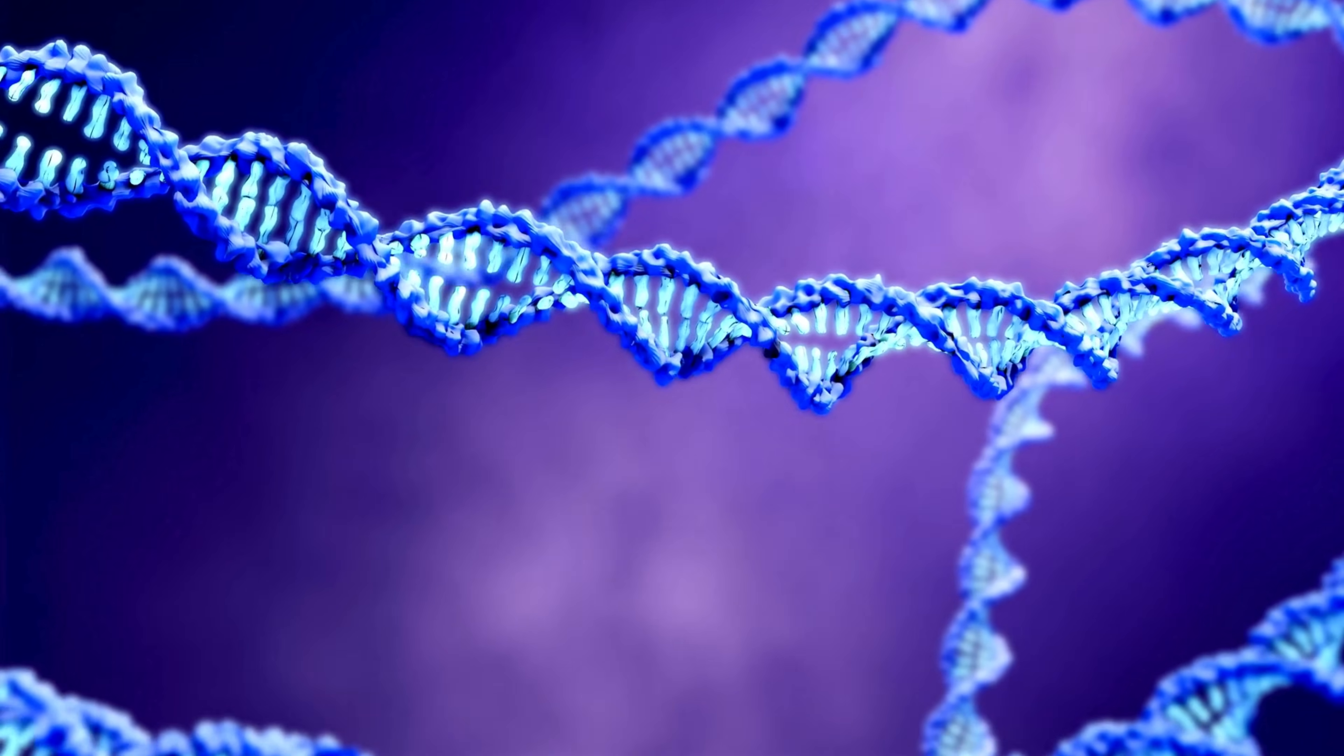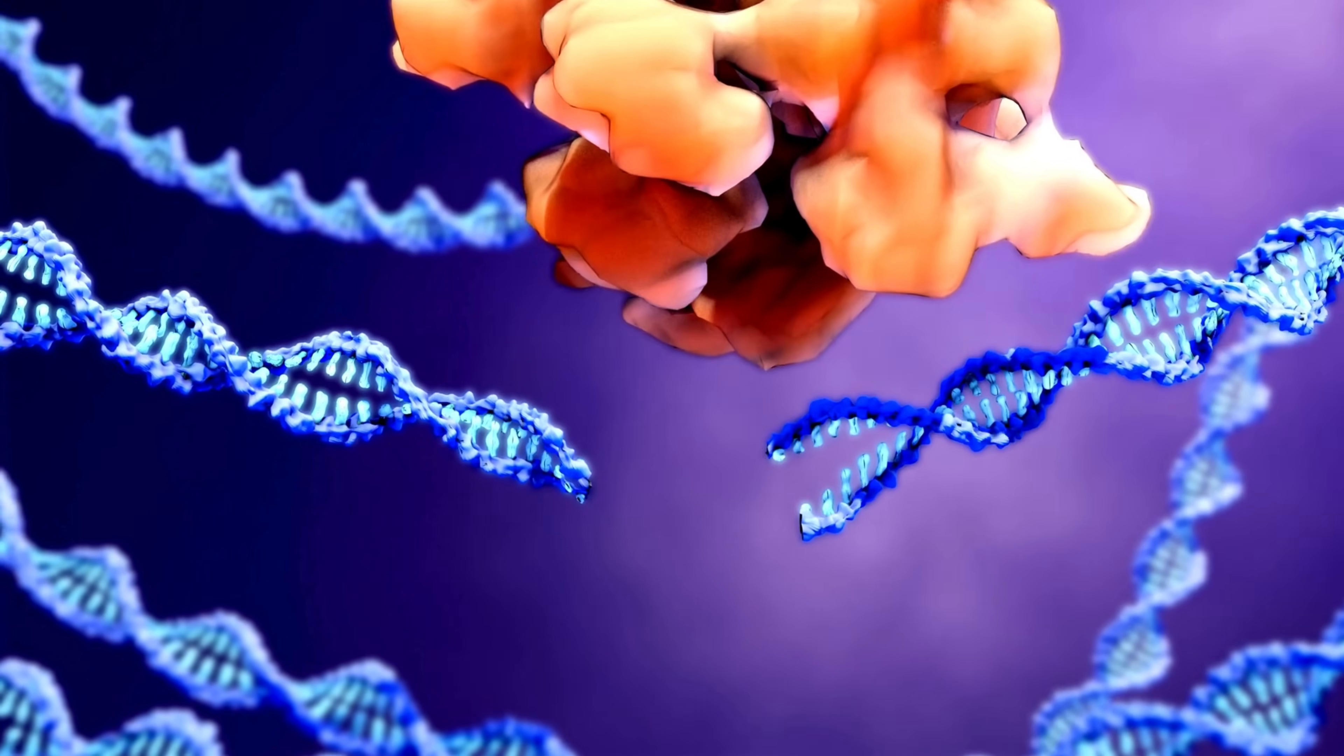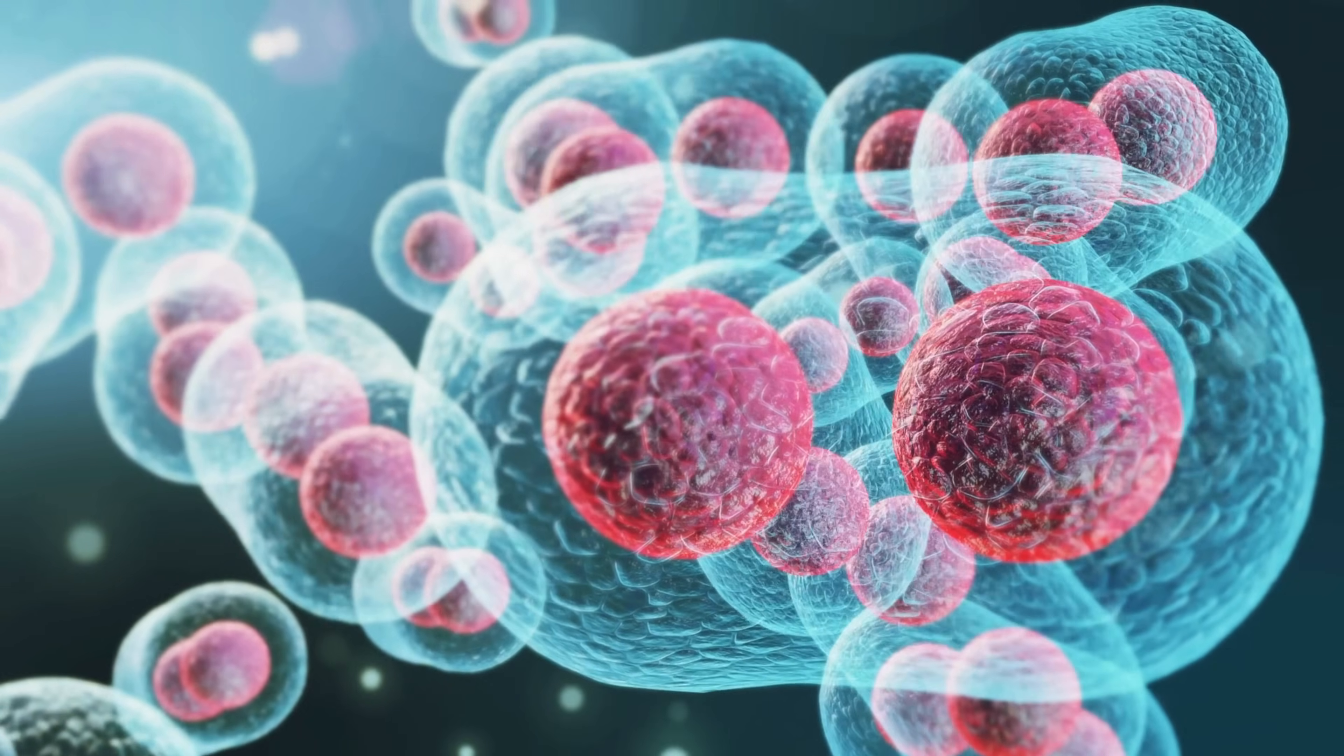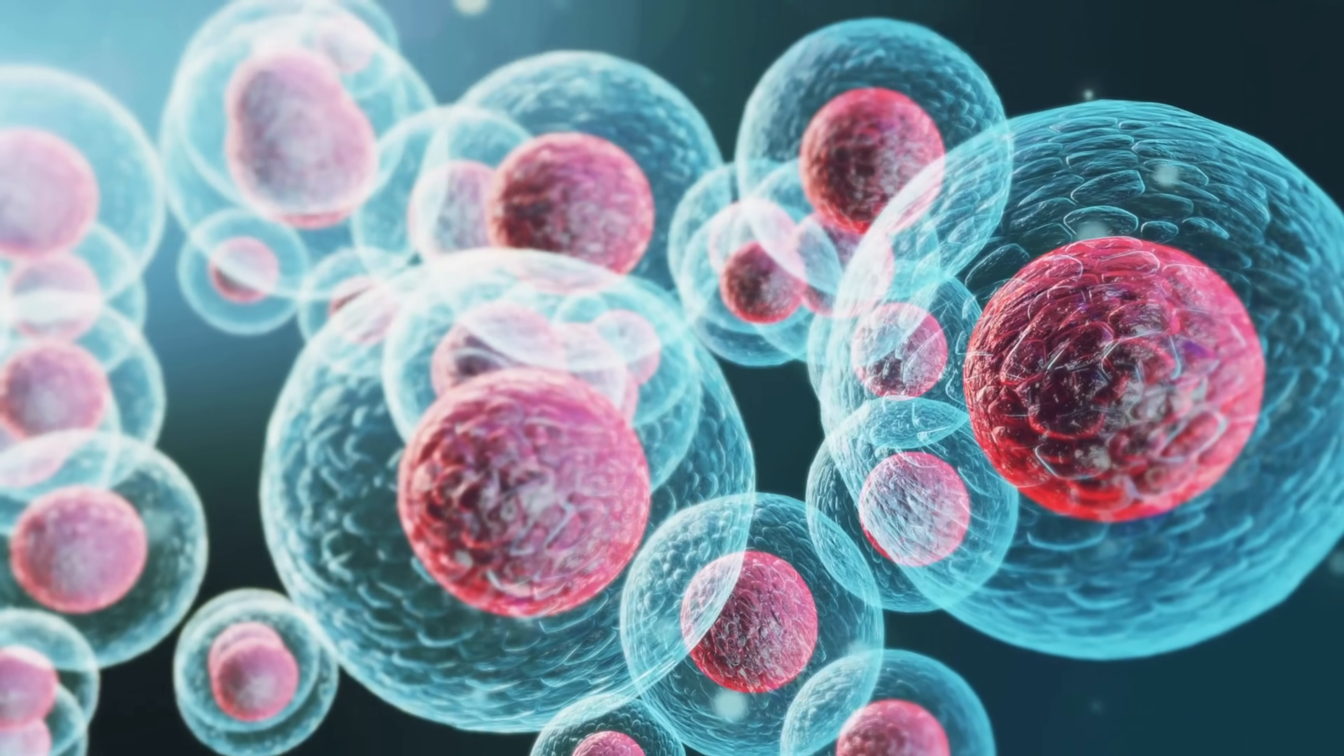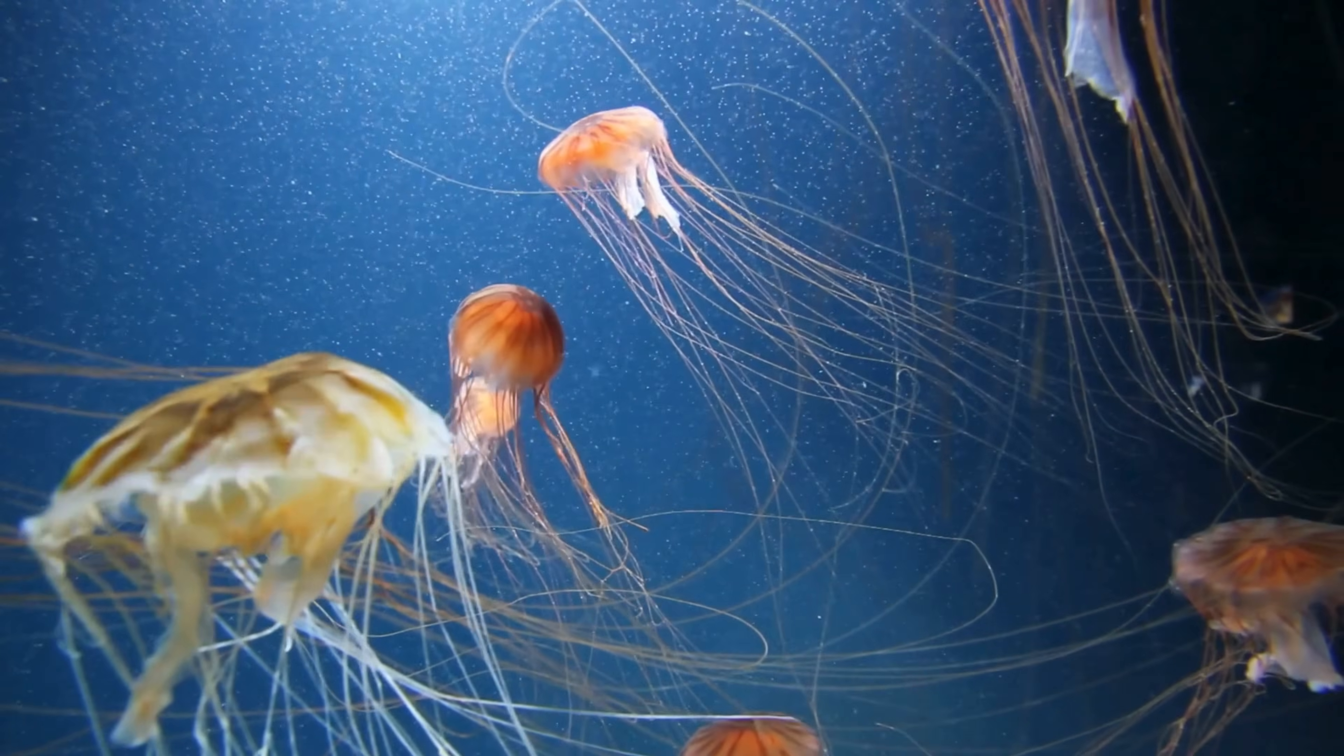Inside these protocells, molecules could react and combine, shielded from the external environment. Over time, some protocells might have contained RNA or other self-replicating molecules, allowing them to grow, divide and evolve. This development of protocells is a significant step because it could lead to true cells, the basic units of life. A cell has everything it needs to survive, grow and reproduce. And from these first cells, life on Earth began to evolve and diversify into the vast array of organisms we see today.